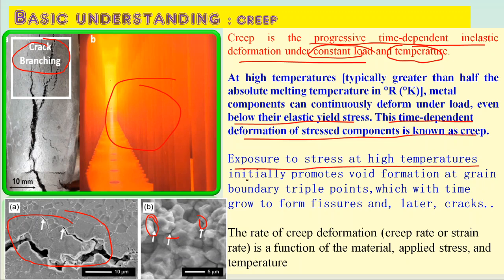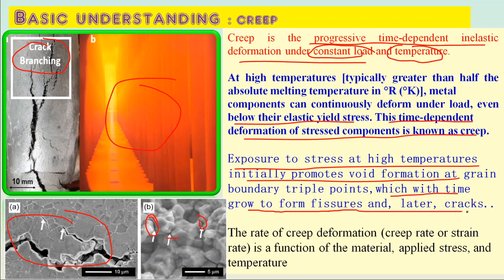This is the manifestation of microfissures forming into cracks. Exposure to stress at high temperature initially promotes void formation at grain boundary triple points, which with time grows to form fissures and later into cracks. The rate of creep deformation is a function of the material metallurgy being used, the applied stress, and the operating temperature.